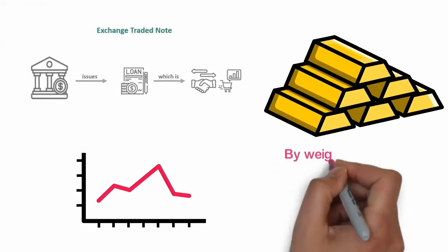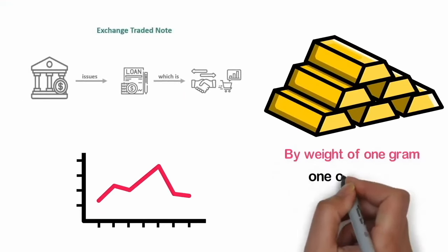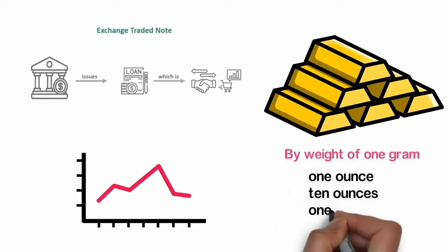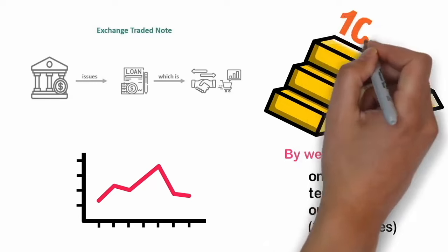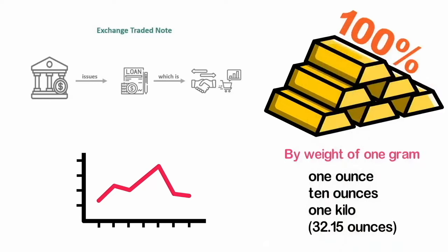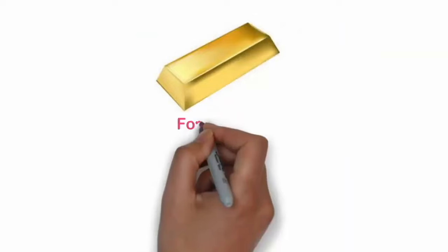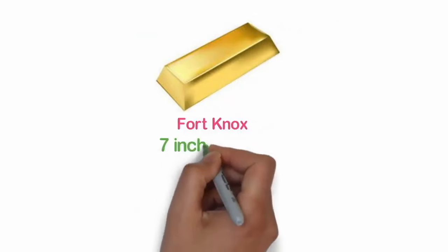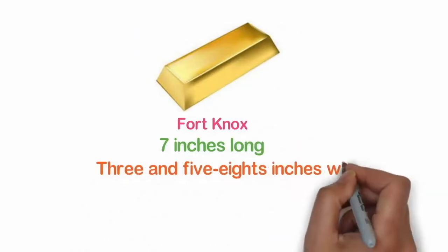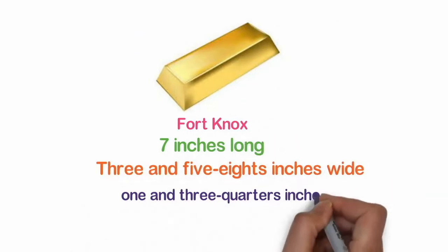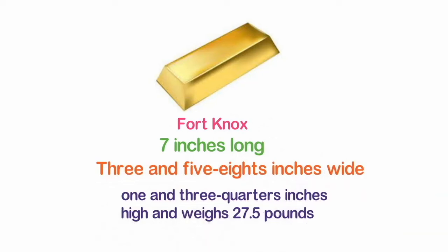Gold bars are available by weight of 1 gram, 1 ounce, 10 ounces, and 1 kilo, or 32.15 ounces. The bars generally have near 100% purity. A standard gold ingot, yes, the kind depicted in movies and found in Fort Knox, is 7 inches long, 3 5/8 inches wide, and 1 3/4 inches high, and weighs 27.5 pounds.